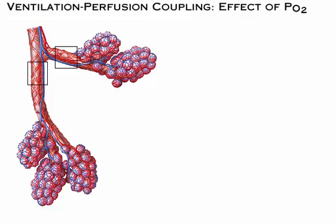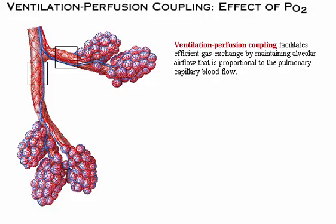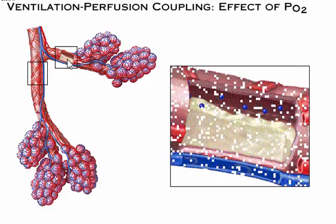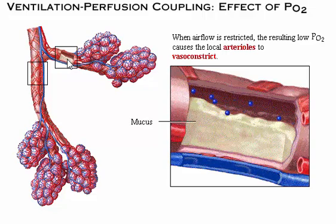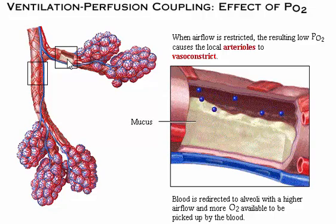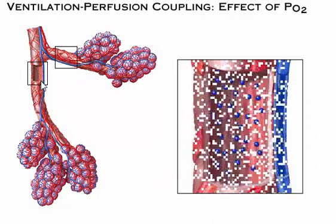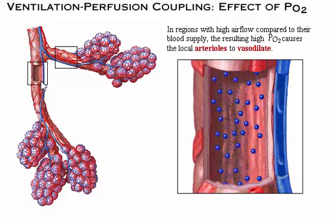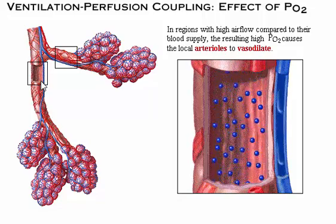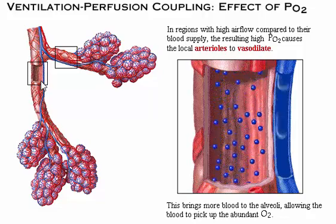Let's look at the third factor in external respiration. Ventilation-perfusion coupling facilitates efficient gas exchange by maintaining alveolar airflow that is proportional to the pulmonary capillary blood flow. When airflow through a bronchiole is restricted, as when blocked by mucus, the resulting low PO2 causes the local arterioles to vasoconstrict. This response redirects the blood to other alveoli which have a higher airflow and therefore have more oxygen available. In regions with high airflow compared to their blood supply, the resulting high PO2 causes the local arterioles to vasodilate, bringing more blood to the alveoli and allowing the blood to pick up the abundant oxygen.